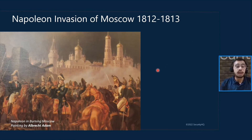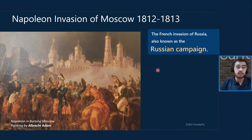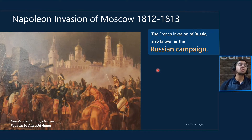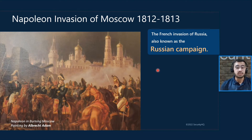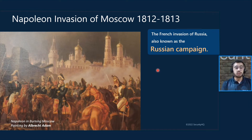This is a painting by a famous Bavarian painter, Albrecht, who accompanied Napoleon on his invasion to Moscow in 1812 to 1813. This campaign, also known as the French invasion of Russia or the Russian campaign, is an attempt by Napoleon Bonaparte to force the Russian Empire back into the continental blockade of the United Kingdom. This invasion is considered to be one of the most lethal invasions in world history. During this invasion, Napoleon wanted to separate and destroy the armies going from the United Kingdom towards Russia.